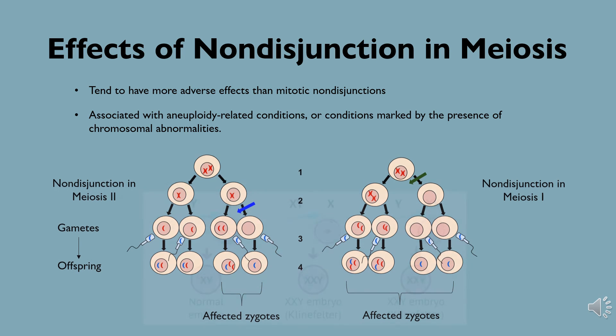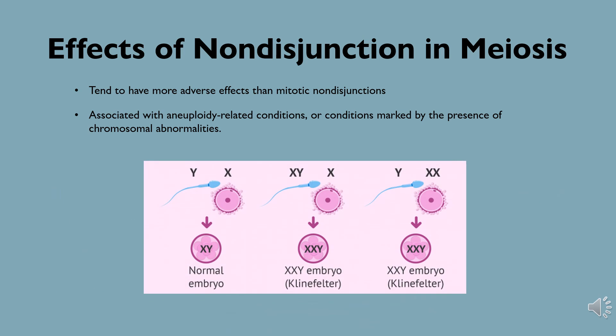Trisomy XXY, for example, is an instance of a nondisjunction of the sex chromosomes that results in an extra X chromosome being inherited by a child.